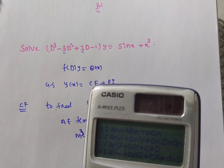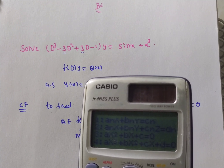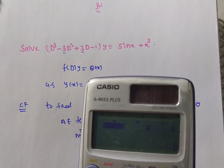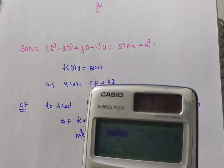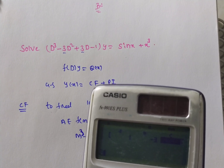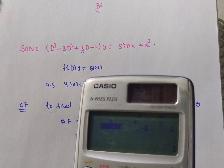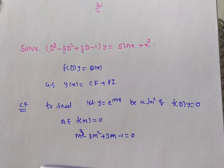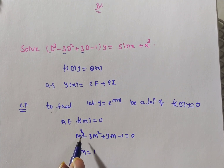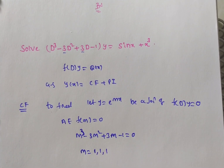Enter the coefficients: the m³ coefficient is 1, m² coefficient is -3, m coefficient is 3, and the constant is -1. Press equals. We get x = 1. Pressing again shows the root is repeated. Since it is a cubic polynomial, m = 1 is repeated 3 times: m = 1, 1, 1.